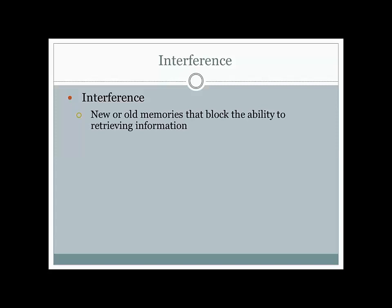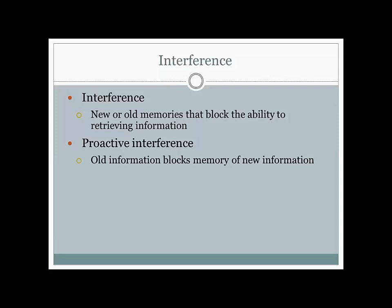There are two different types of interference. Proactive interference happens when old information — stuff you already know — gets in the way of trying to learn and remember new information. For example, perhaps you took Spanish in high school and here in college you decide to take French. Since these are both based in Latin, there are a lot of words that are fairly similar between the two. It may be that when you try to learn a new French word for something, you struggle because you keep recalling the original Spanish word. This is proactive interference because the original memory is reaching forward to interfere with the acquisition of new information — the block is for what's coming ahead.